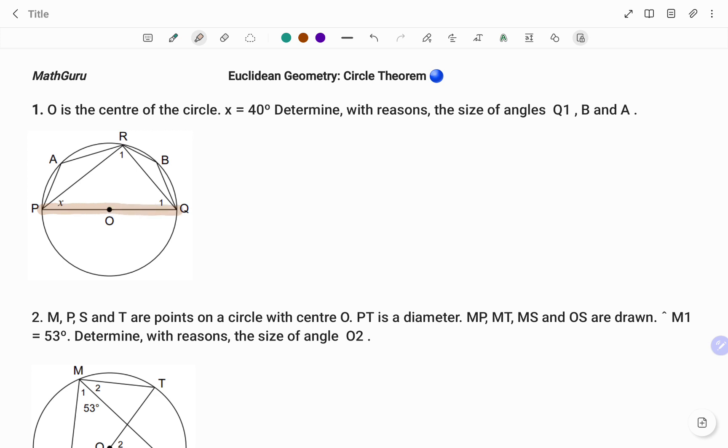So using the triangle PRQ, what I have is angle x, as been given to us as 40 degrees. I'm going to put that in the diagram. Therefore, angle R1 is equal to 90 degrees, and the reason being angles in a semicircle. That's one of the circle theorems.